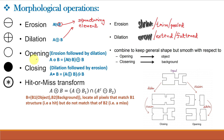Opening removes small objects from the foreground — smooth with respect to the object, usually bright pixels — placing them in the background. Closing removes small holes in the foreground, changing small islands of background into foreground while staying smooth with respect to the background. For opening, we first do erosion (A ⊖ B) which removes the bridge, then dilation to smooth the structures while preserving the general shape. For closing, we first do dilation to fill the gaps, then erosion to smooth and preserve the general shape.